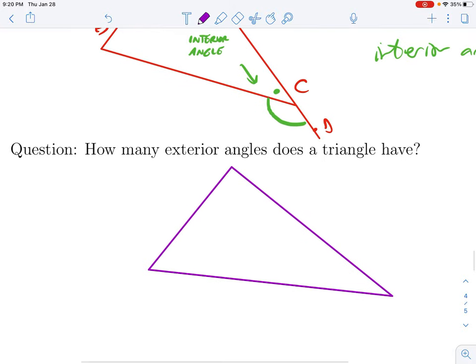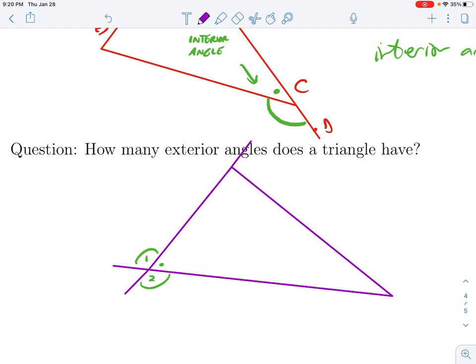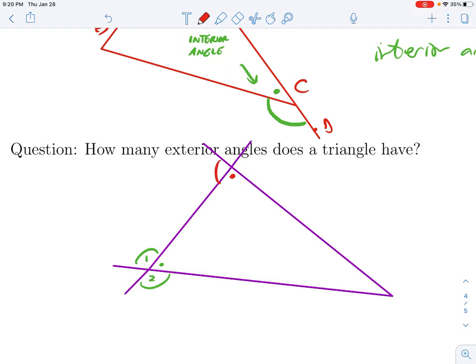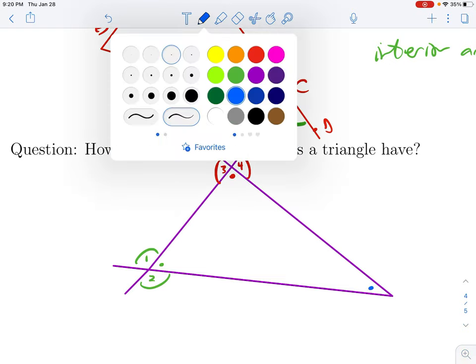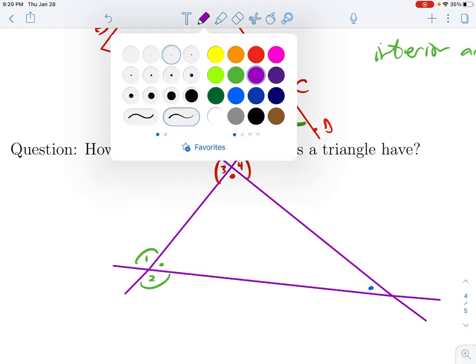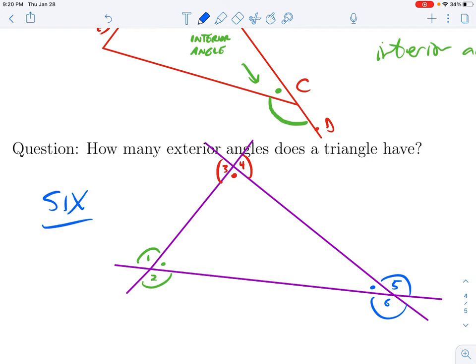So what we can do is at every vertex, we can extend the sides a little bit. So right here, this one, angle one, is an exterior angle, as is this one, angle two. They're both in linear pairs with that thing I've marked with a dot. So I could extend my sides up here. This is an interior angle. Angles three and four are exterior angles. Over here, I have an interior angle. Extend this side. Extend this side. I've created new angles. Here is angle five. Here is angle six. So there are six. Two at each vertex.